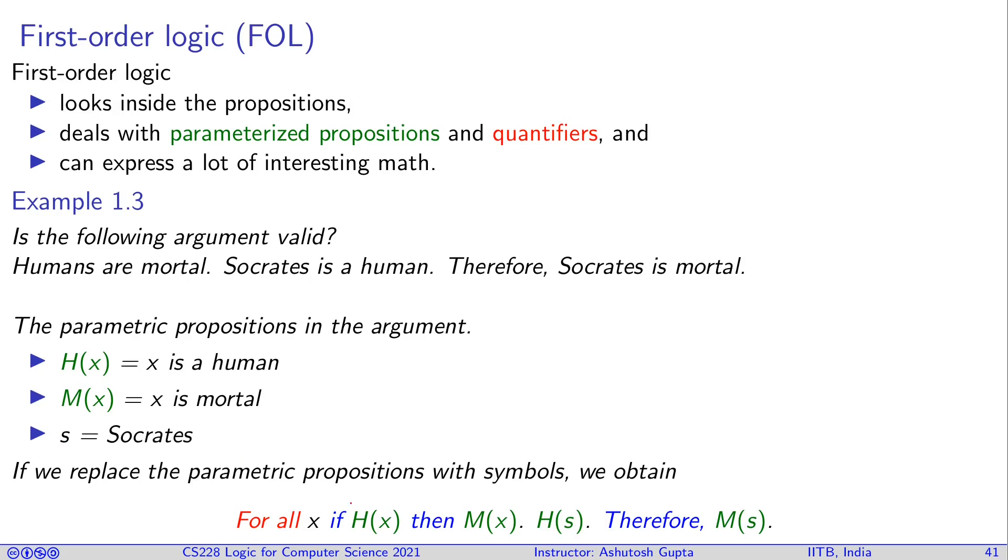So you will say in the first statement when we say humans are mortal, we can say for all x, if x is human then x is mortal, M of x.